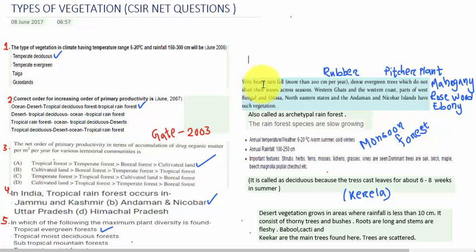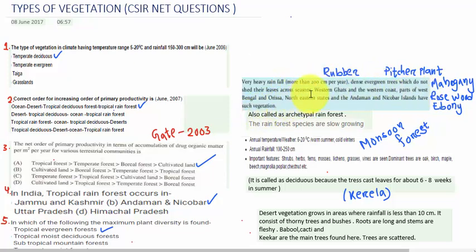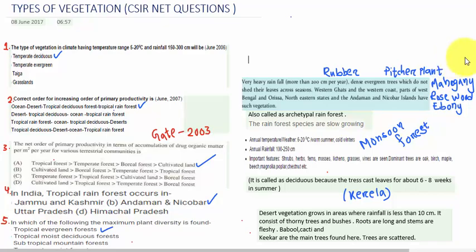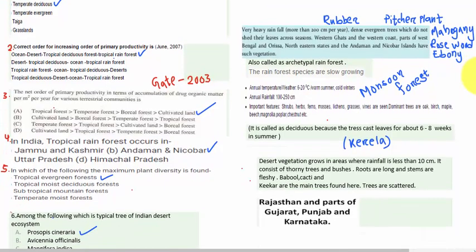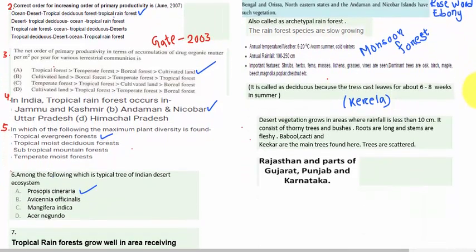In tropical rainforests, there is very heavy rainfall of over 200 centimeters per year, with evergreen trees that do not shed their leaves across seasons. These are found on the western coasts and western coast parts of West Bengal and Odisha, the northeastern states, and the Andaman and Nicobar Islands.